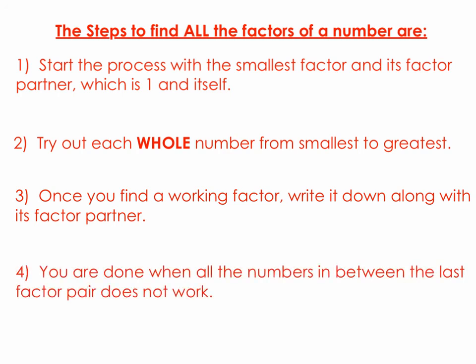You know that you are done when all the numbers in between the last factor pair does not exist. In the example of 24, 4 by 6 is the last pair and the only whole number in between 4 and 6 is 5. Since 5 doesn't work, you know that you are done. Okay, that's it for the lesson.